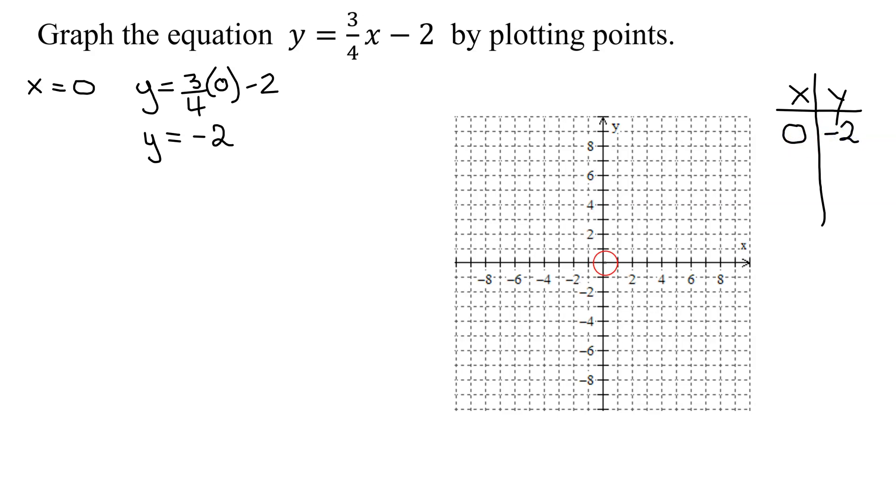Let's graph that. Start at the origin. x is 0 means don't go left or right. y is negative 2 means go down 2. So there's my first point.